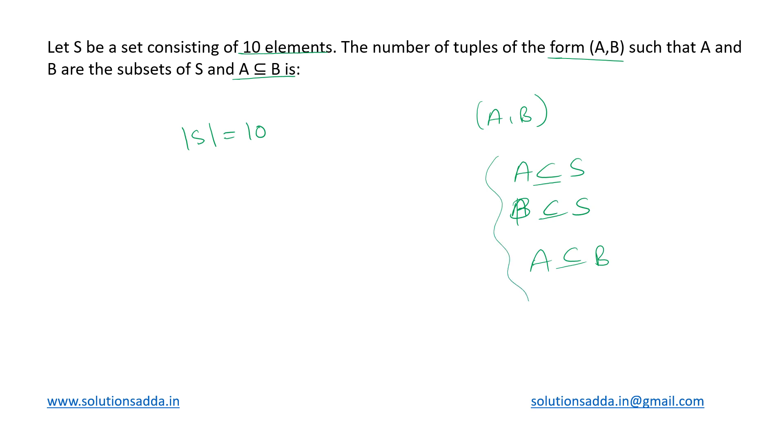Let us consider every element one by one. Each element will have three choices based on these conditions. Let's say the element is x. The first choice would be that x belongs to neither set A nor set B.